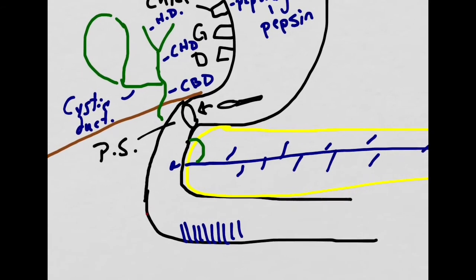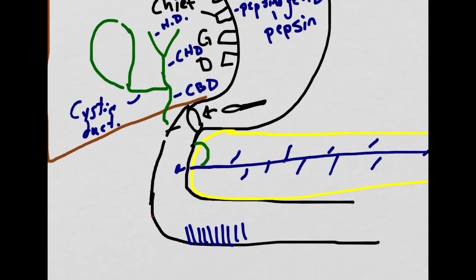Now let's discuss the hormones that are released at the duodenum. The four hormones are going to be secretin, cholecystokinin or CCK, GIP, gastric inhibitory polypeptide, and gastrin from the G cells.